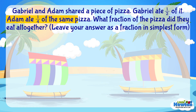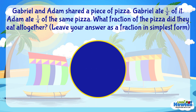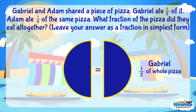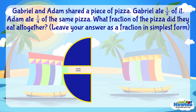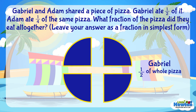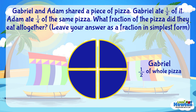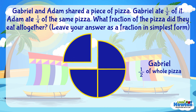Adem ate one fourth of the same pizza. Let's take another look at the whole pizza — it has been cut into two equal parts. Let's take a closer look at the other one half, and cut it into two equal parts. We'll do the same for the one half that Gabrielle ate. Now four parts make up the whole pizza. One part out of the four parts represents the fraction of pizza that Adem ate.